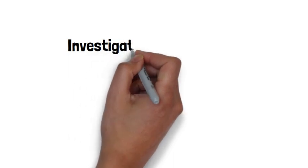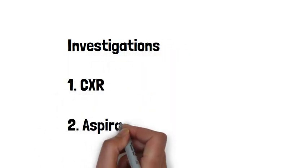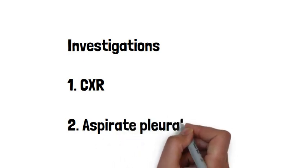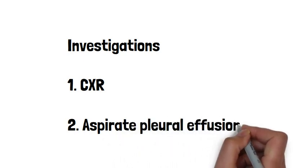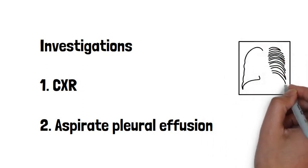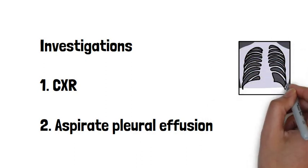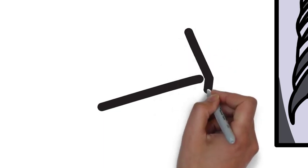Now, moving on to the investigations. In anyone with a pleural effusion, you need to do a chest x-ray. So always think to do a chest x-ray. And in a patient with a pleural effusion, on the chest x-ray, there will be generally an area of whiteness. And this represents the fluid.